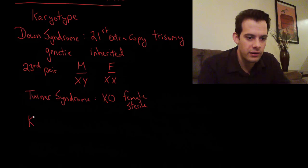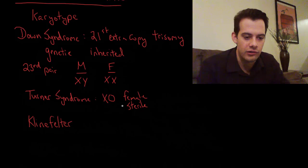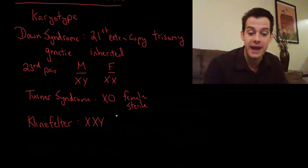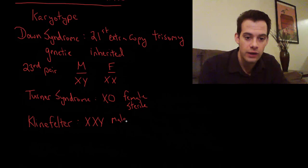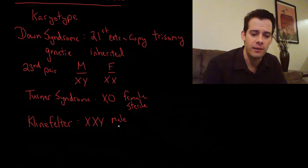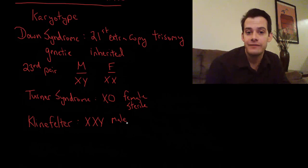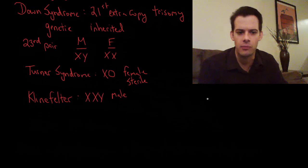Another chromosomal abnormality on the 23rd pair is Klinefelter syndrome. In Klinefelter you have an XY — making you male — but you also have an extra X, so we have trisomy on this pair: XXY. You're going to be male, but you're likely to be sterile, though some males with Klinefelter are able to produce sperm. You're also likely to develop breasts, tend to be taller than average, and have smaller than average testicles. You may also have some ambiguous genital development.